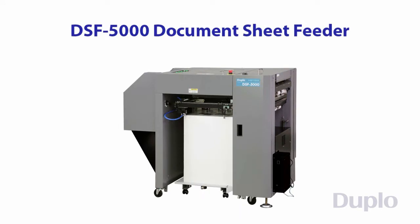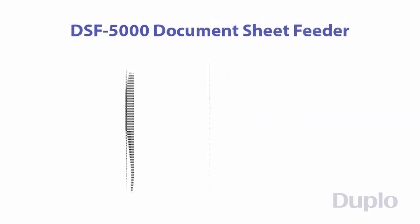The DSF 5000, Duplo's document sheet feeder, provides high-speed reliable feeding of both digitally and pre-collated offset printed applications at a speed of up to 400 sheets per minute.